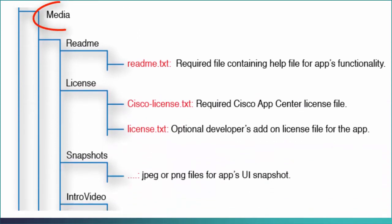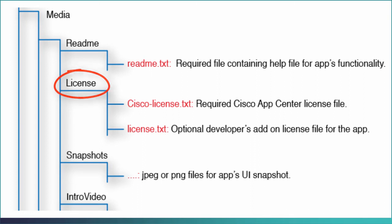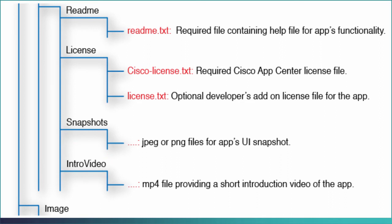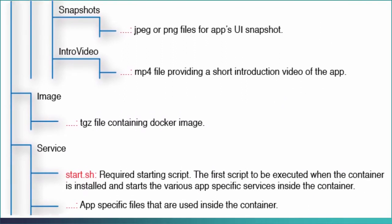The third is the media folder, which includes the required readme folder containing the end user license agreement for the app, the required license folder containing the Cisco license file for the app, the snapshots folder containing files which provide a preview of the app, and the intro video folder containing a video which introduces the app. The fourth is the legal folder containing the legal information required for your app.